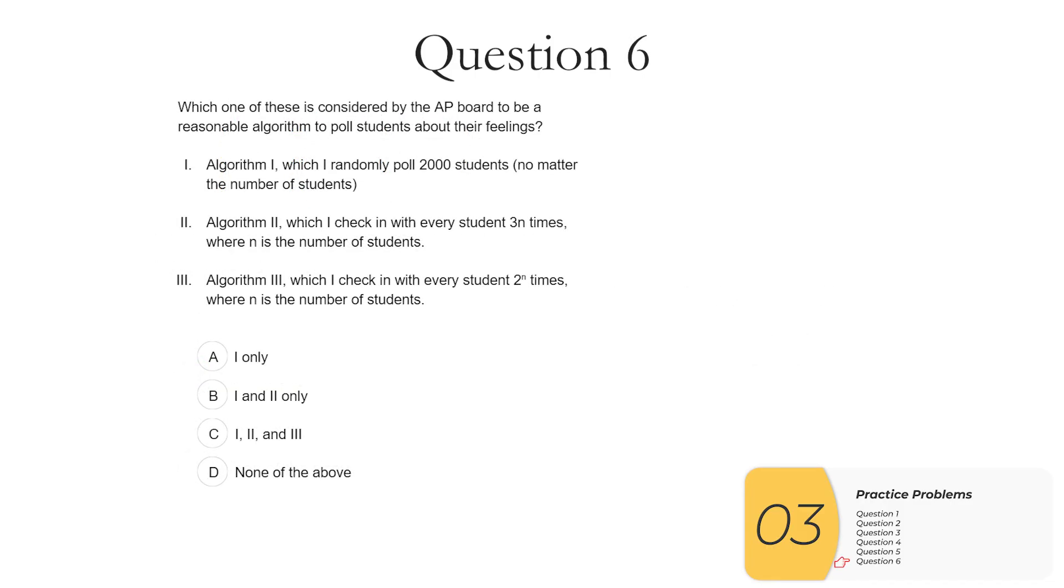Question six: this is kind of more of the same. Which of these is considered to be by the AP board to be reasonable. Algorithm one, where I randomly poll 2,000 students no matter the number of students. This is a constant, so it's different from the questions you've seen before, but constant values are definitely reasonable algorithms. You could also think of this as something that scales as n to the zero, in which case it's a polynomial, but again, it is reasonable. Algorithm two, where I check in with every student 3n times where n is the number of students. This scales linearly. We don't really care about that factor of three, and as we knew from before, linear algorithms are considered reasonable. Finally, algorithm three, which scales as two to the n. Hopefully by now you can recognize this right away. This is not reasonable according to the AP board. So your answer is one and two only.